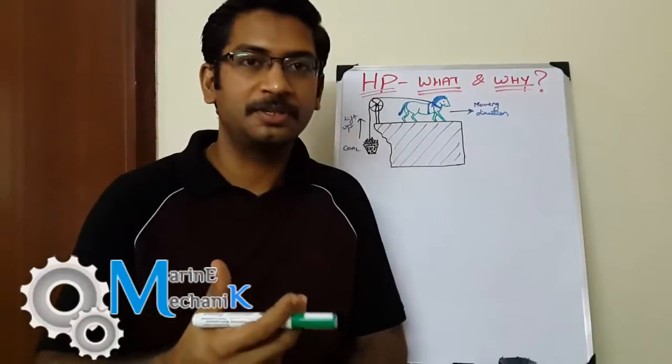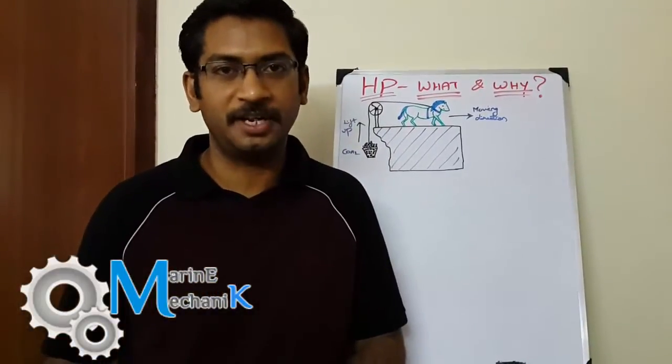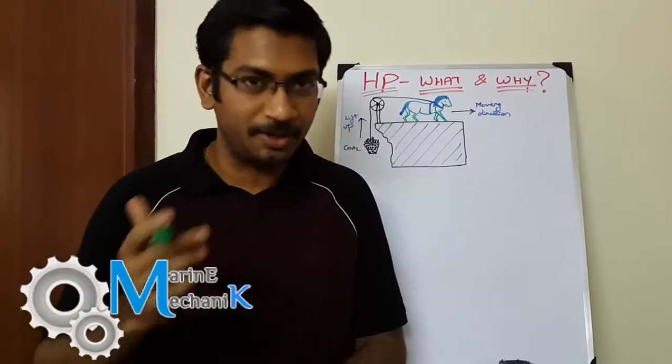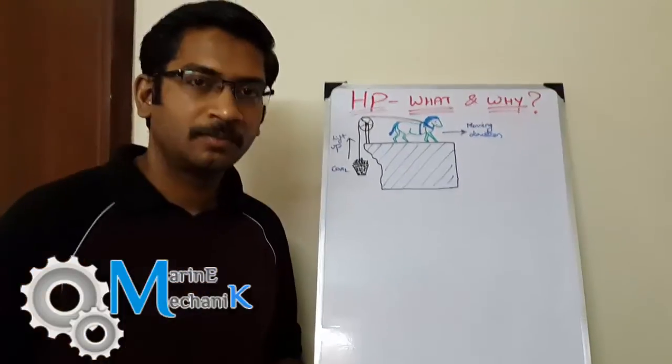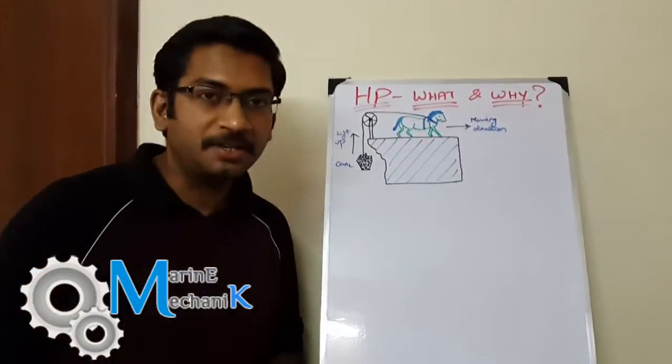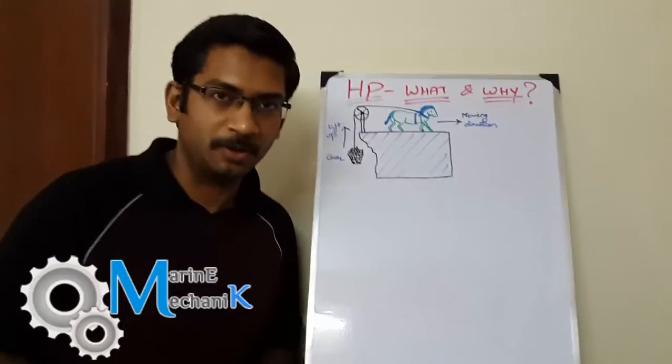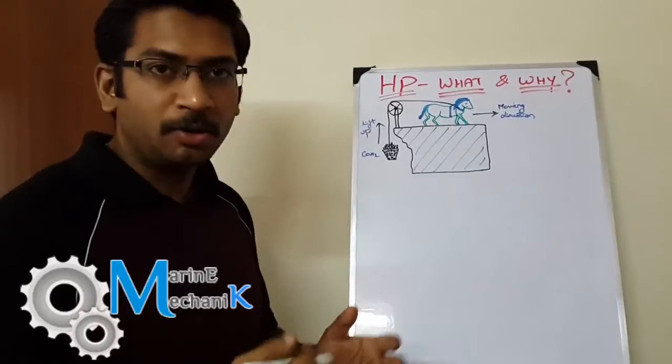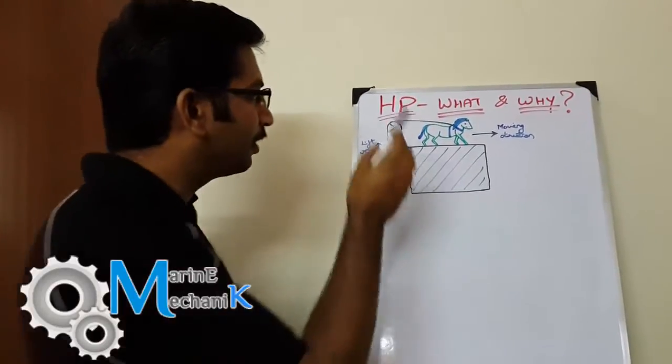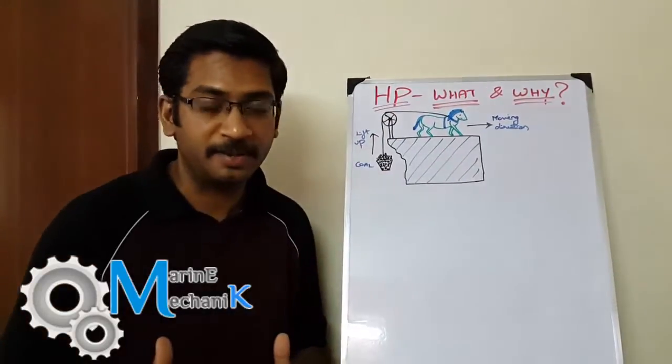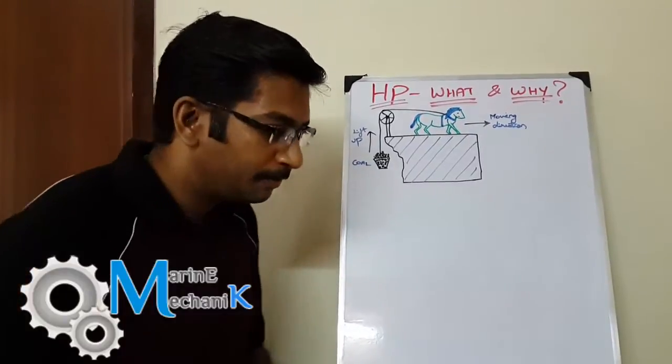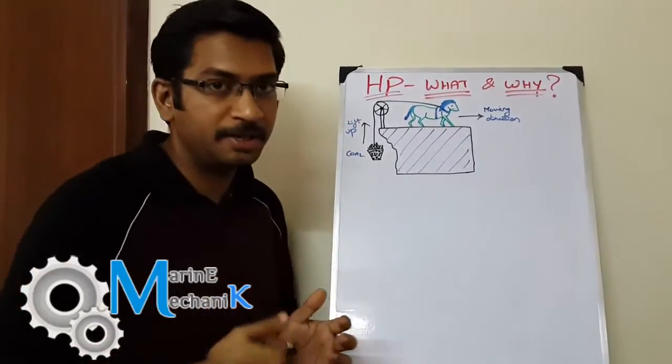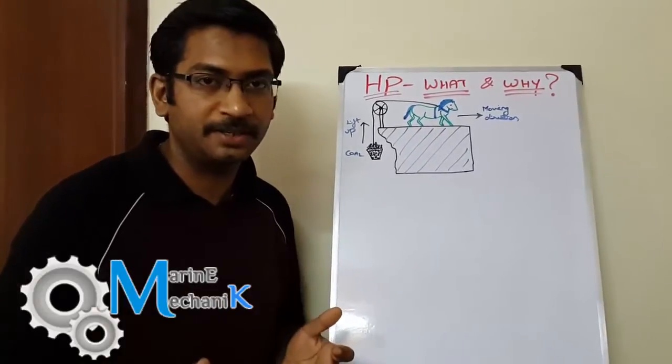In this video, we'll first understand how the term horsepower originated, and then address why horsepower and not donkey power. It all started with steam engineer James Watt during the 16th and 17th century. In the coal mines of the UK, they were using a pony—a small horse—to lift coal from the mines and supply it to thermal power plants.